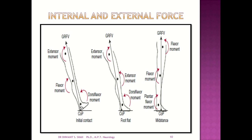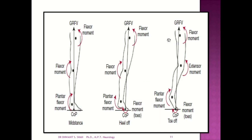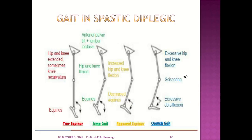At initial contact, the ground reaction force passes behind the ankle, producing a dorsiflexor moment, and a flexor moment at the knee and hip. At foot flat, it passes behind the ankle producing a plantarflexor moment, and behind the knee producing a flexor moment at the hip. At mid-stance, a plantarflexor moment occurs at the ankle, a flexor moment at the knee, and a flexor moment at the hip. At heel-off, greater plantarflexor moment at the ankle, flexor moment at the knee and hip. At toe-off, a large plantarflexor moment at the ankle, extensor moment at the knee, and flexor moment at the hip.